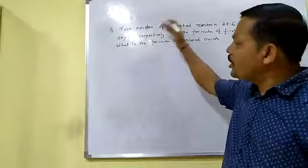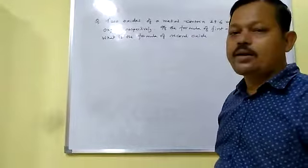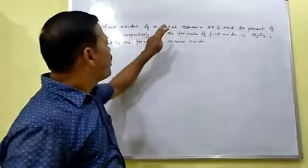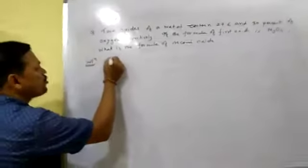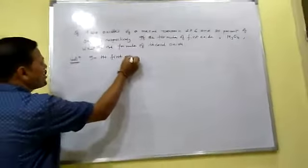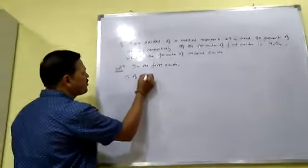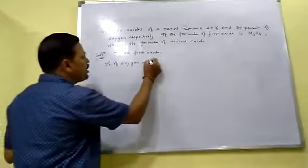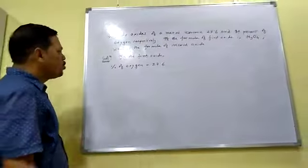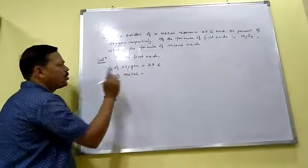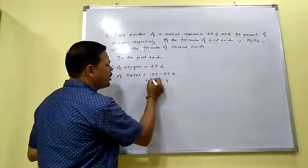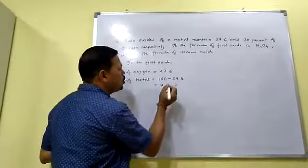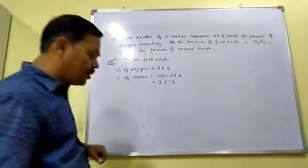If you know the atomic mass of the metal, then you can find the formula of the second oxide. So our first target is to find the atomic mass of the unknown metal. In the first oxide, the percentage of oxygen is given as 27.6%. Since the compound contains only metal and oxygen, the percentage of the metal is 100 minus 27.6, which equals 72.4%.